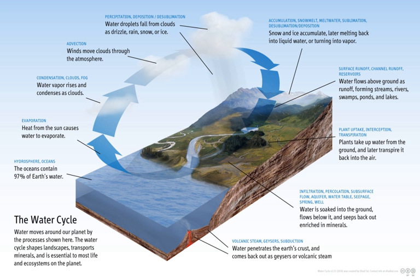The residence time of a reservoir within the hydrologic cycle is a measure of the average age of the water in that reservoir. Groundwater can spend over 10,000 years beneath Earth's surface before leaving. Particularly old groundwater is called fossil water. Water stored in the soil remains there very briefly, because it is spread thinly across the earth and is readily lost by evaporation, transpiration, stream flow, or groundwater recharge. After evaporating, the residence time in the atmosphere is about nine days before condensing and falling to the earth as precipitation.